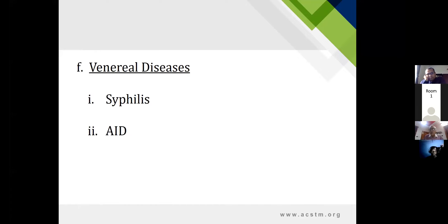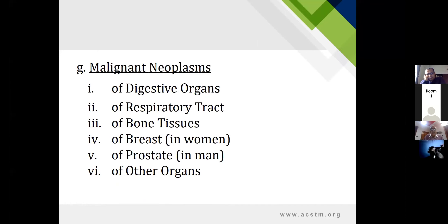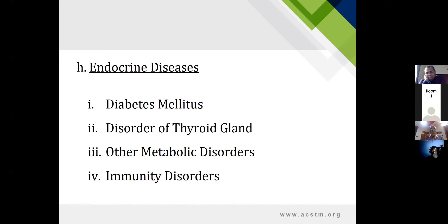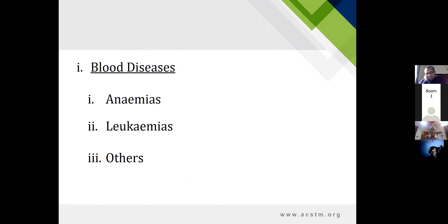In venereal diseases, syphilis has been greatly minimized but not completely eliminated, and there is AIDS — autoimmune deficiency syndrome. Malignancies can occur in any region: digestive organs, respiratory system, bone tissue. Most common are breast cancer in females and prostate cancer in males. In endocrine diseases prevalent in South Asia and Pakistan, diabetes mellitus, thyroid disorders especially myxedema, other metabolic disorders, and immunity disorders are common.